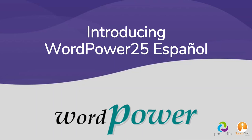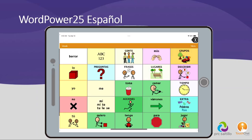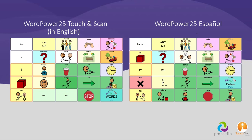PRC Saltillo is excited to introduce the newest offering in the Word Power suite: Word Power 25 Español. Fewer and larger buttons on the screen make this vocabulary a great option for individuals who are beginning to develop communication skills or who have visual and/or motor difficulties. Word Power 25 Español still provides access to a robust vocabulary, including core and fringe words. It aligns closely with Word Power 25 Touch and Scan in English, offering bilingual ability to access both languages at the touch of a button, allowing communication partners to model language and individuals using AAC to communicate in whichever language is needed.